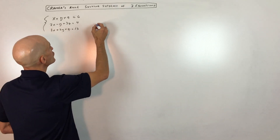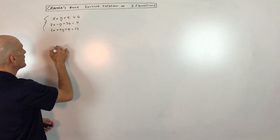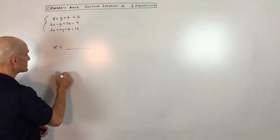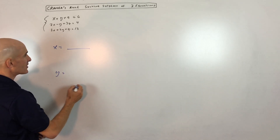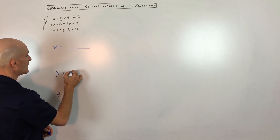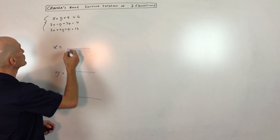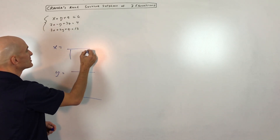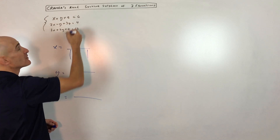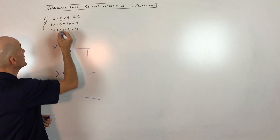Cramer's rule: you're going to calculate the determinant. What we're going to do is take the coefficients of the variables and make them into a matrix.